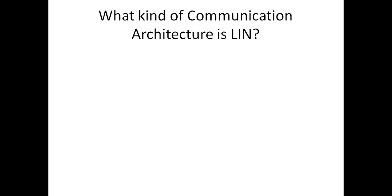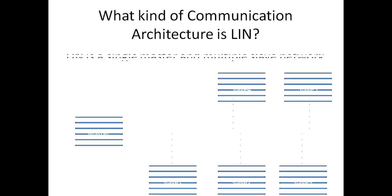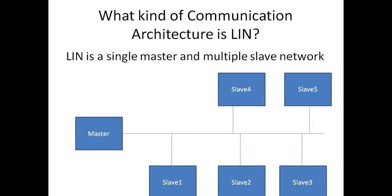What kind of communication architecture is LIN bus? LIN is basically a single master multiple slaves architecture. Unlike CAN where you have multiple masters, in LIN there is a single master which has complete control over the bus, deciding who has to send and receive data at what point of time.